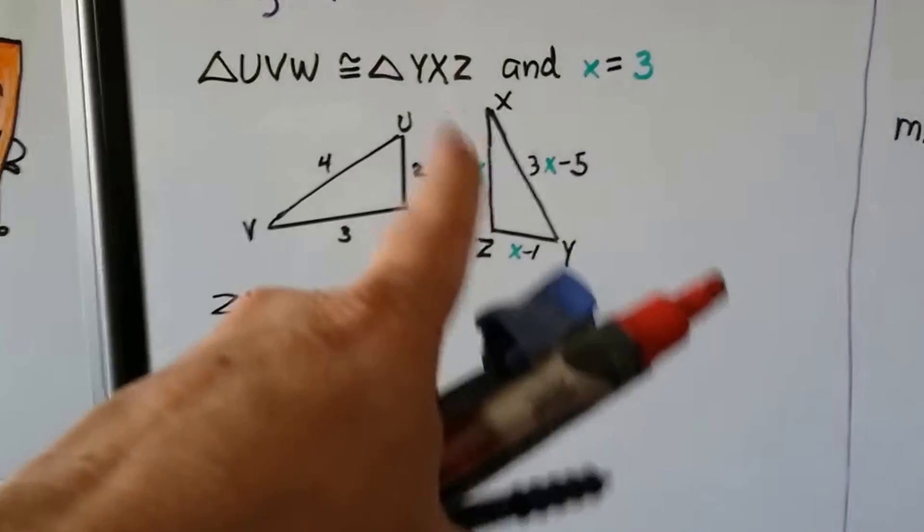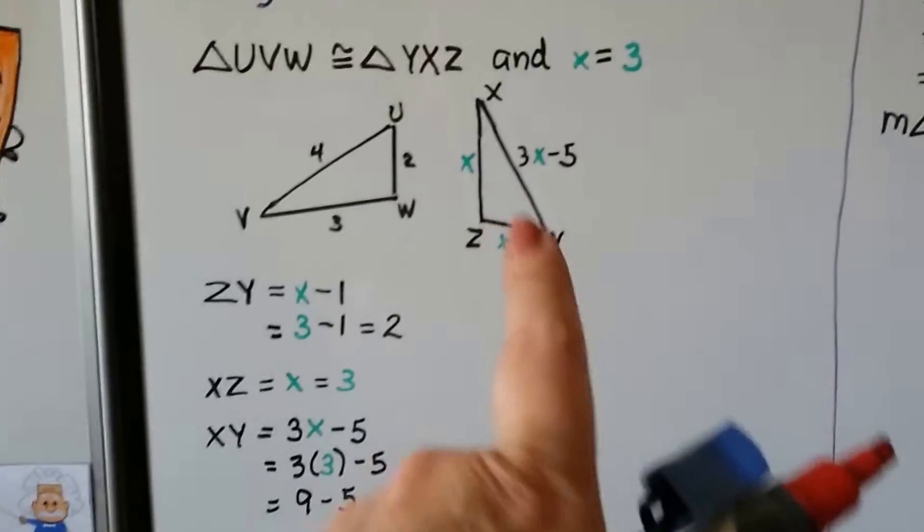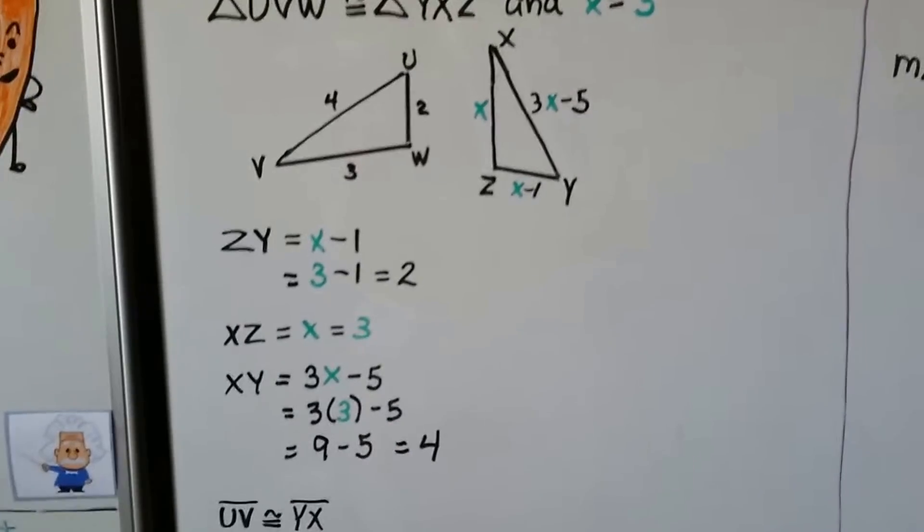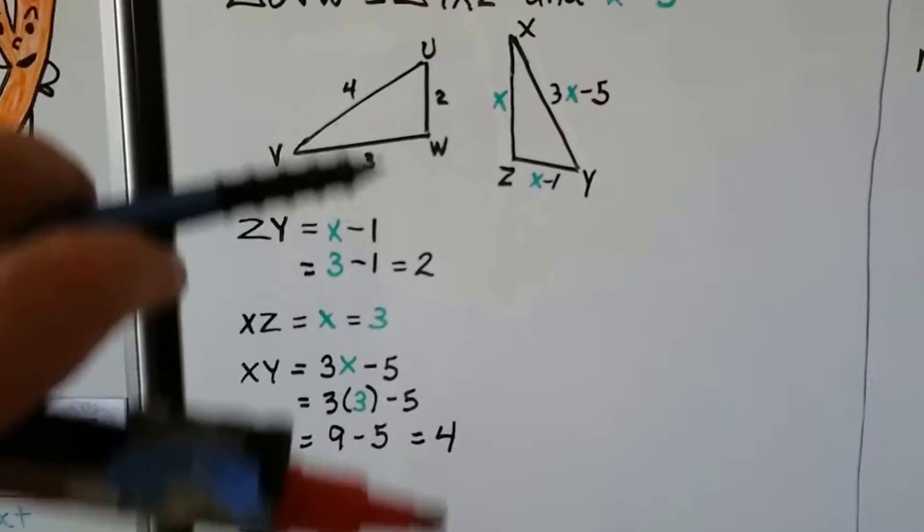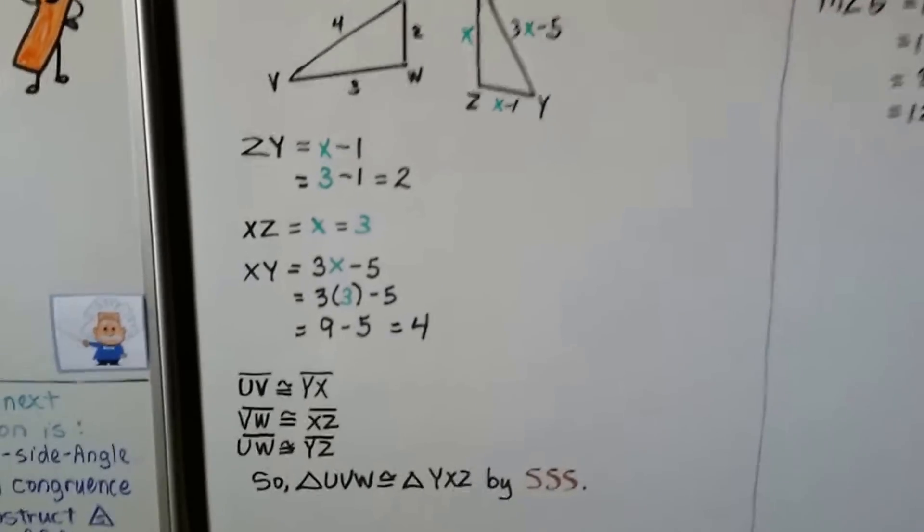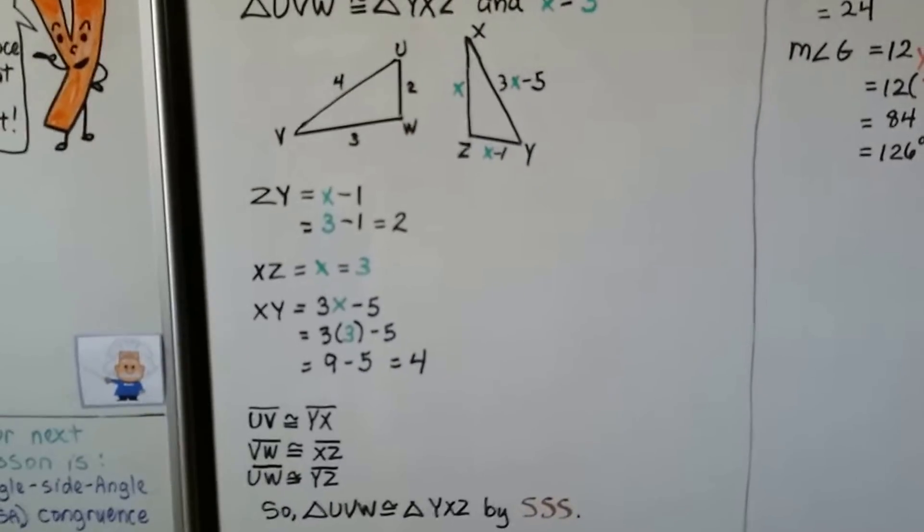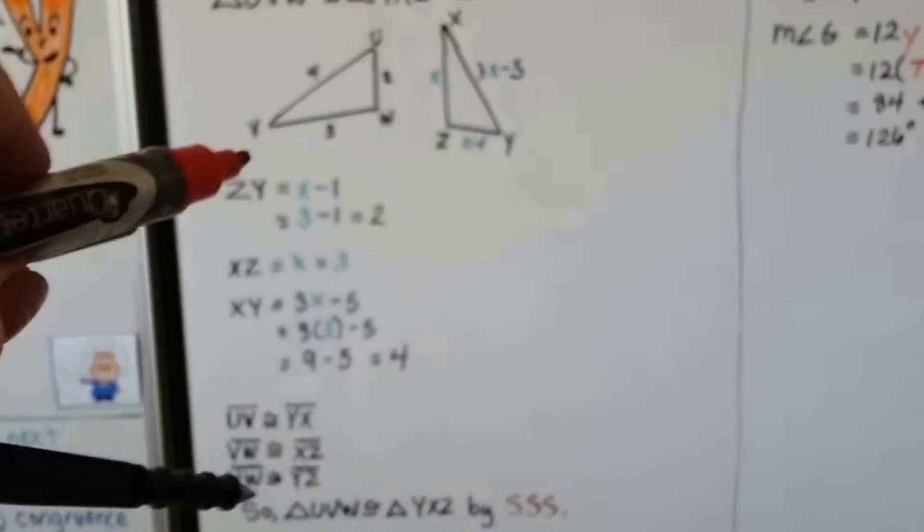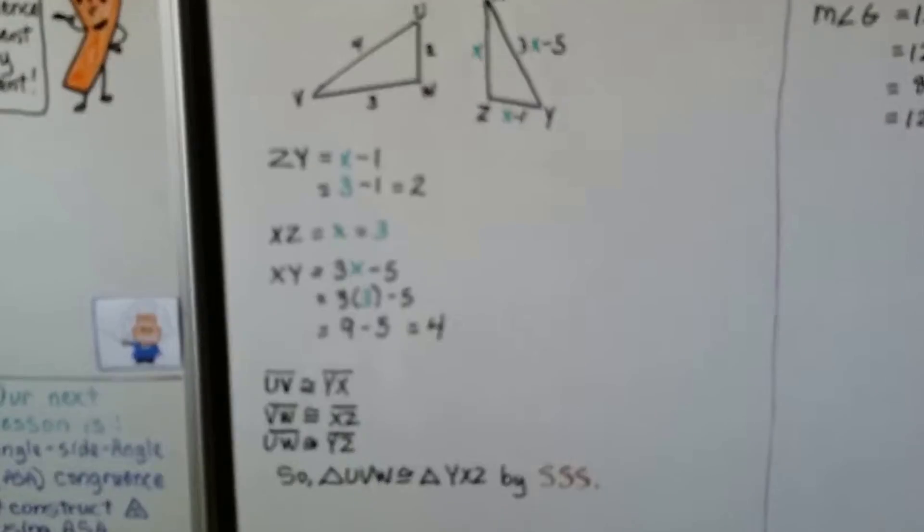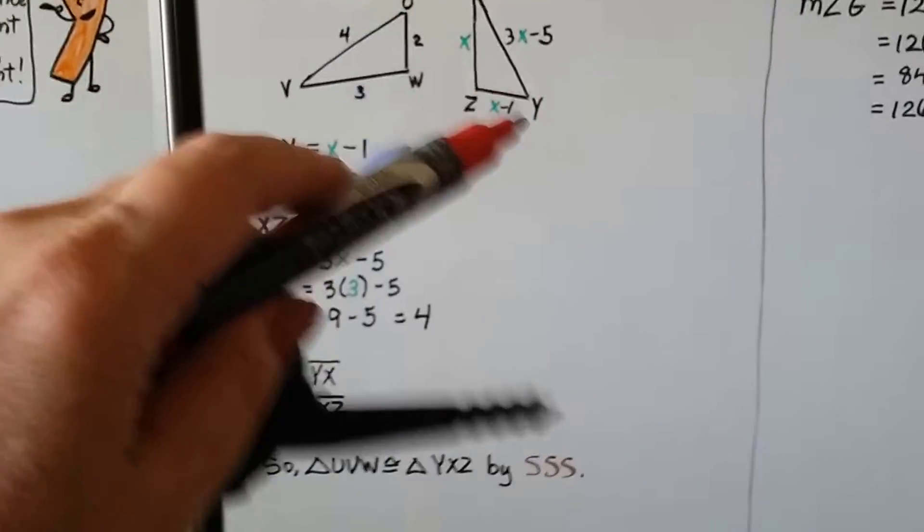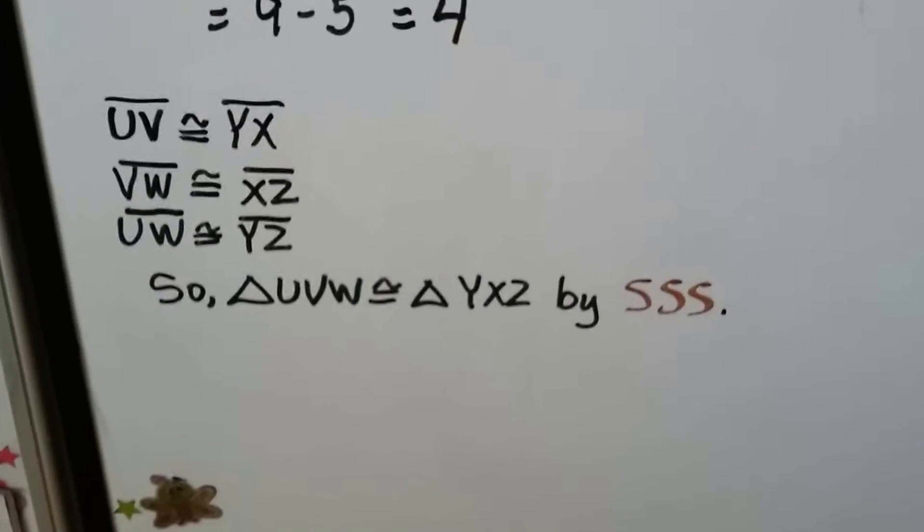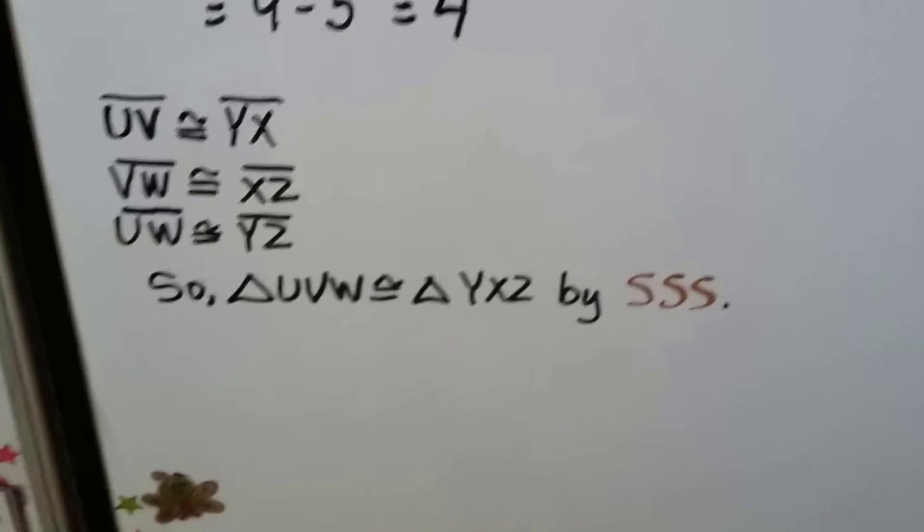We know XZ is x, which is 3. And XY is 3x minus 5. Well, x is 3, so that's 3 times 3 minus 5, which is 9 minus 5, which is 4. So now we've got a 2, a 3, and a 4, just like we did in this one. We know UV is congruent to YX, VW is congruent to XZ, and UW is congruent to YZ. We've got three sides that are congruent. So triangle UVW is congruent to triangle YXZ by side side side.